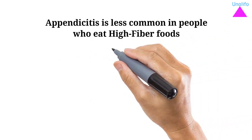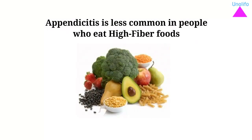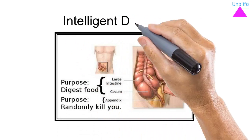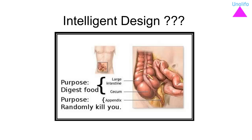Appendicitis is less common in people whose diet is high in fiber consisting of a lot of fruit and vegetables. Given that the appendix is so often removed without any later consequences to the person, people often question why we have one in the first place.